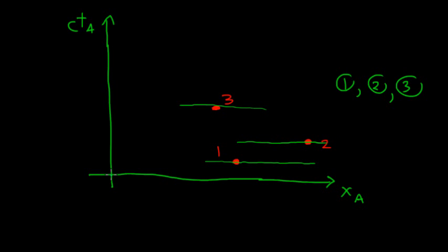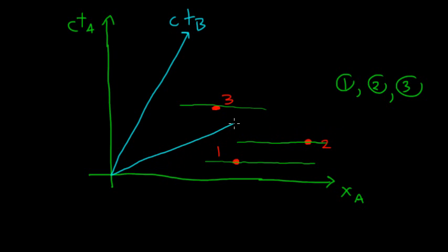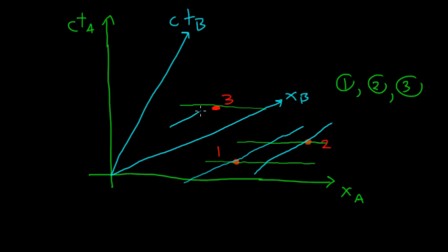What will observer B say? Let's put the time axis and spatial axis of B on the diagram. B says that all of these events happen at the same time, then all of these, then all of these — it's a little crooked but that's okay. So observer B will say that two happened first, then one happened, and then three happened.